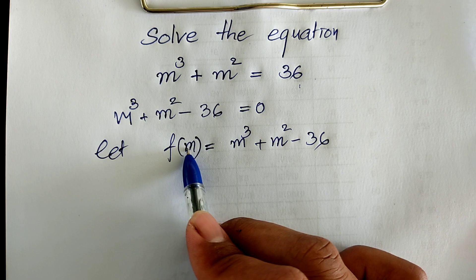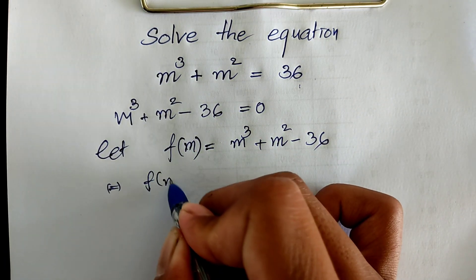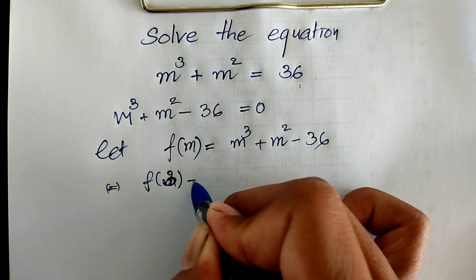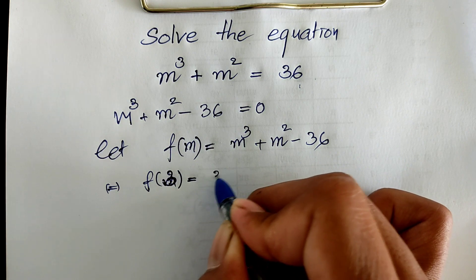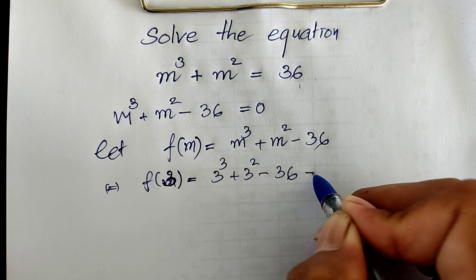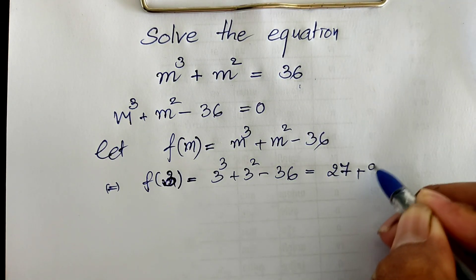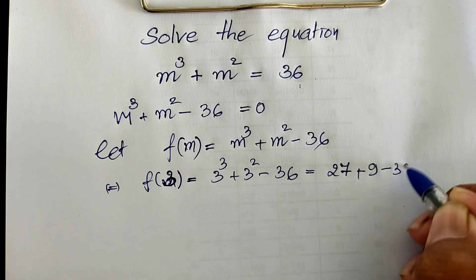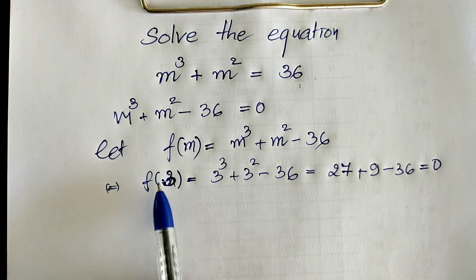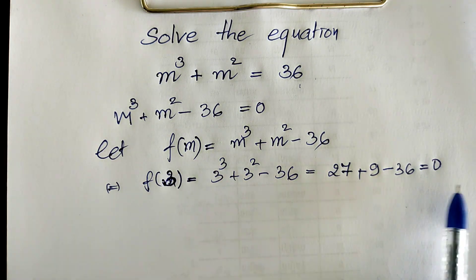I replace m by 3, so f of 3 equals 3 power 3 plus 3 square minus 36, which equals 27 plus 9 minus 36, equals 0.